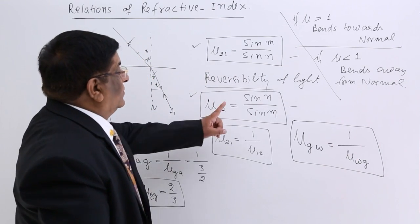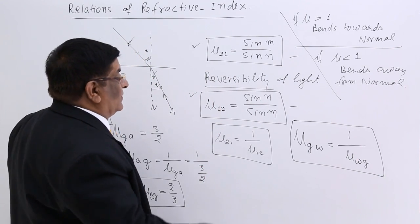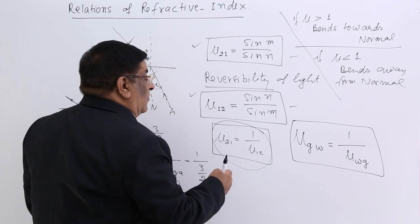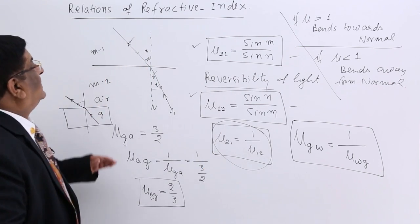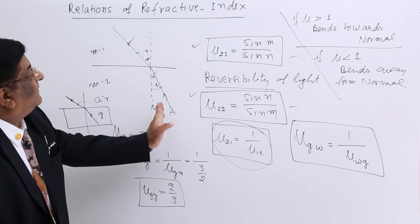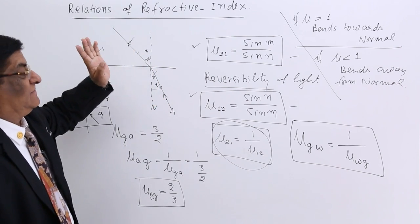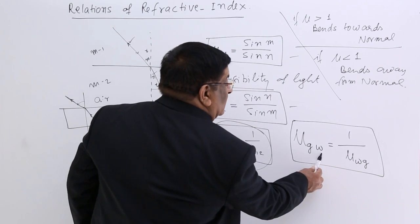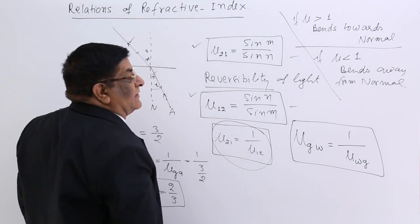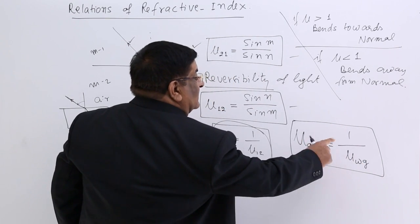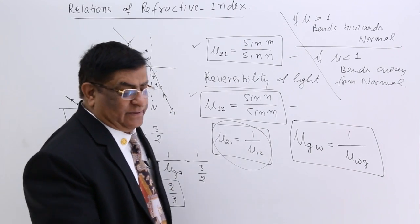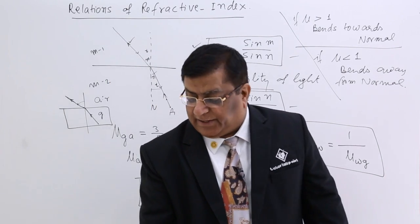What I wanted to tell you is basically this: we can always invert the values. The refractive index for one direction is the inversion of the refractive index for the other. Mu glass-water reversed becomes mu water-glass, and mu water-glass reversed becomes mu glass-water. This is one relation. Now we go for another relation when a ray is passing through more than 2 mediums.